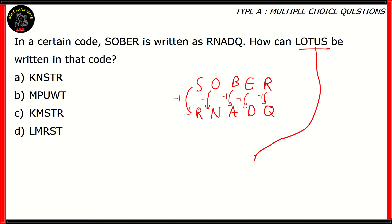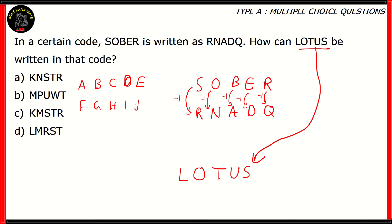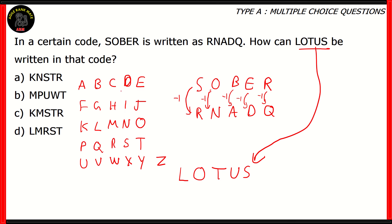Now that we know the logic of the code, let's use it for LOTUS. If you want to do it the right way, you need to have the alphabetical table with you. So I write the letters of the alphabet five at a time: A-B-C-D-E, F-G-H-I-J, K-L-M-N-O, P-Q-R-S-T, and finally U-V-W-X-Y. This gives us an easy way to write the alphabet while at the same time showing us the positions of each letter, which is very helpful when coding a word like LOTUS.